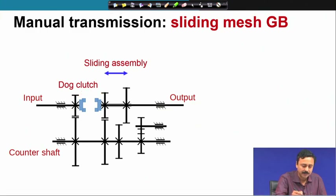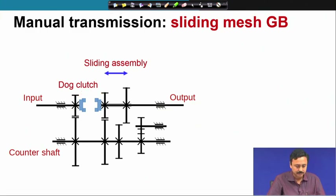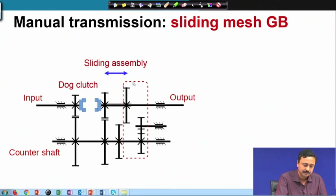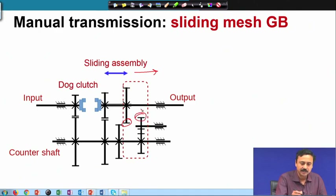These two components are the dog clutch — they come in contact and lock the input gear on the input shaft to the output shaft. There is another part of this gear box which is the reverse gear. If you slide the sliding assembly to the right, then this gear will come and mesh with this gear.